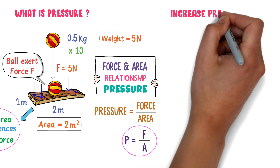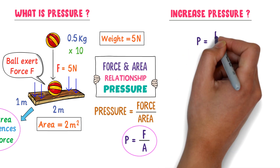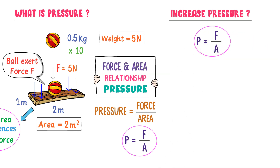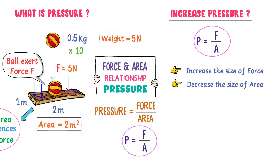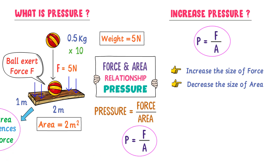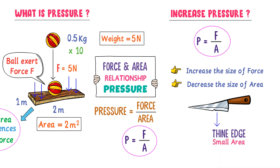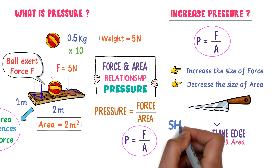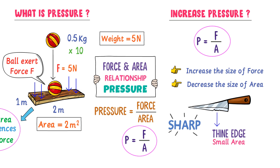Now, how can we increase the pressure? We know that P is equal to F divided by A. It means that if we increase the force, pressure increases. Secondly, if we decrease the area, pressure increases. So either increase the force or decrease the area in order to increase the pressure. For example, consider this knife — it has a very thin edge, meaning it has a very small area. The smaller the area, the larger the pressure, so it will be very sharp and we can cut things very easily.